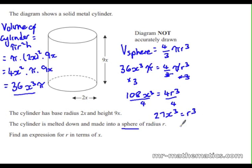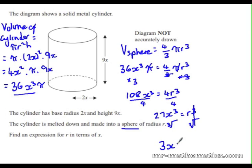We don't want r cubed, we want r. So we'll take the cube root of both sides. The cube and the cube root cancel. The cube root of 27 is 3, and the cube root of x cubed is x. So r equals 3x.